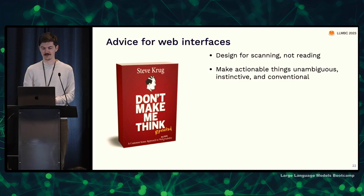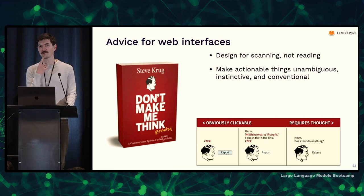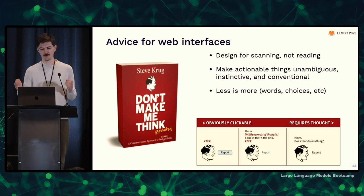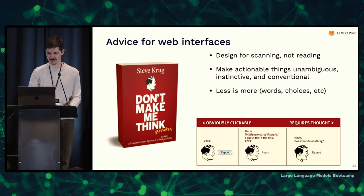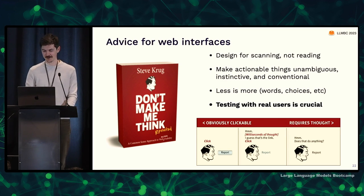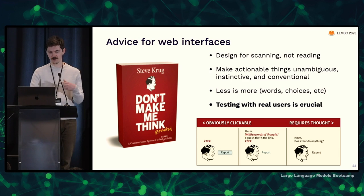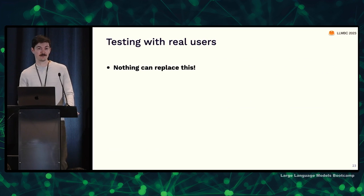Make actionable things unambiguous, instinctive, and conventional. If something is meant to be clickable, make it look clickable. Don't make it look like plain text where the user has to think about whether it's actionable or not. And less is more — when you read your copy, remove half the words and then do that again. That goes for choices too: if you offer the user six choices, that should probably be three, and maybe three should just be two — like save or cancel. But you're not going to deliver the right interface until you actually test with real users.